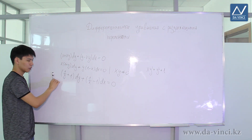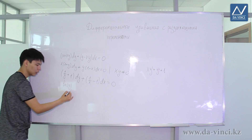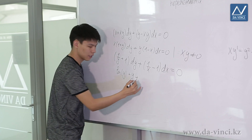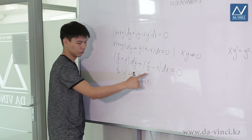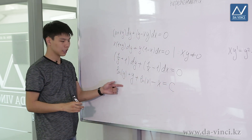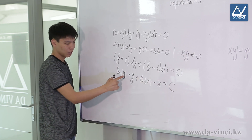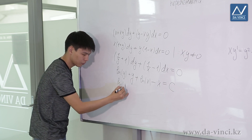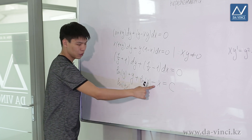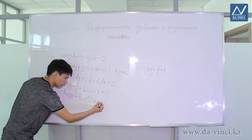Now we just take the integral. The integral of 1/y is ln|y|, and the integral of 1 is y. The integral of 1/x is ln|x|, and the integral of −1 is −x. So integrating gives: ln|y| + y + ln|x| − x = c. We can transform this: ln|y| + ln|x| equals the logarithm of the product |xy|. And we represent y − x as ln(e^(y−x)), so the equation becomes ln|xy| + ln(e^(y−x)) = c.